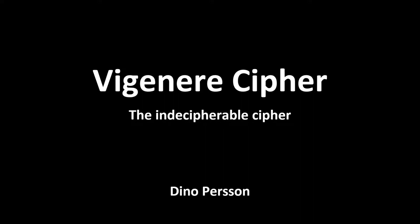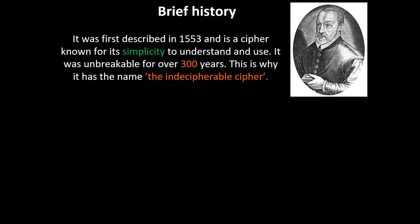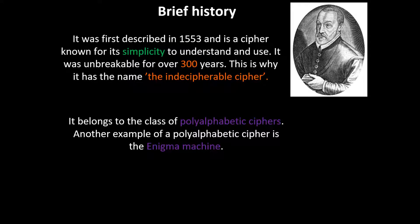In this video I want to go through another cipher that I think is pretty cool — it's called the Vigenère cipher, or the indecipherable cipher. Just a brief history: it was first described in 1553, is known for its simplicity to both understand and use, and was unbreakable for over three centuries. This is why it has the name the indecipherable cipher. It belongs to a class of polyalphabetic ciphers.